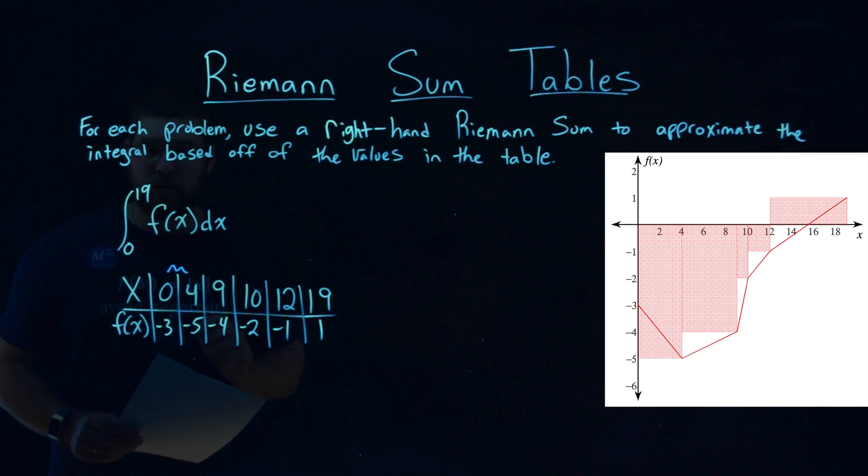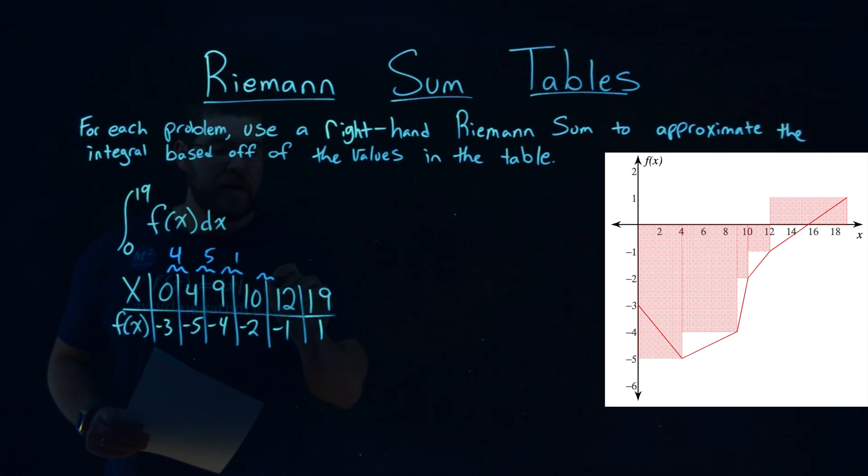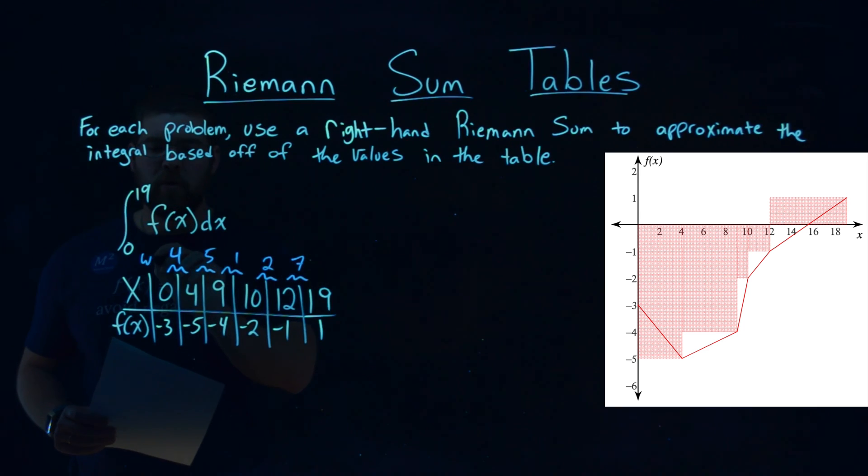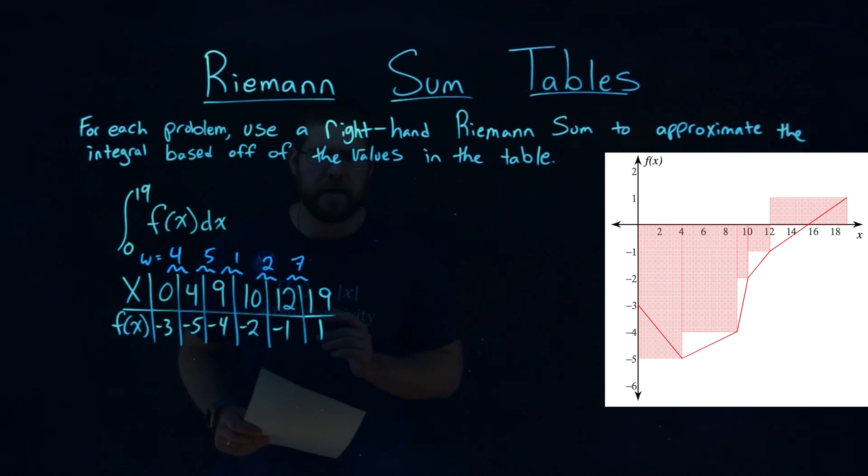So the difference between 0 and 4 is 4, between 4 and 9 gives me 5, between 9 and 10 is 1, 10 and 12 is 2, and 12 to 19 is 7, and that's our width right there for each rectangle.